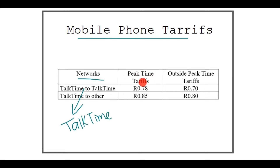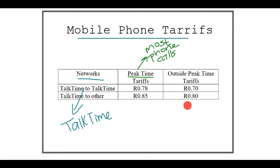You'll notice that peak time tariffs are a little more than the outside peak time tariffs. What does this mean? Peak times are the times where you make the most phone calls — maybe between 9 to 5 during the day. The most phone calls are made during this time, and that's why it's more expensive: they want to encourage people to make phone calls outside of peak time, so let's say during the night times.